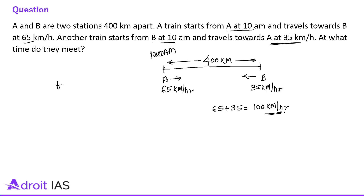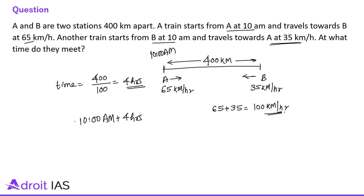They have to cover 400 km, so 400 divided by 100 equals 4 hours. They are meeting after 4 hours from their start. They started at 10 AM, so 10 AM plus 4 hours gives a meeting time of 2 PM. Their meeting time is 2 PM — a very simple question similar to the previous one.